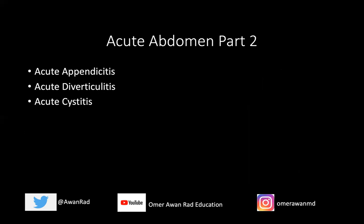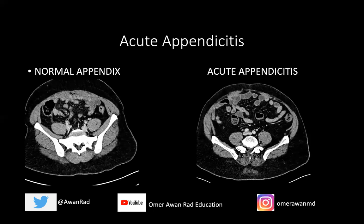So I want to talk about acute abdomen part two. We talked last week about three diagnoses related to the acute abdomen, but these are three additional diagnoses that we think about when we think about acute abdominal pain: acute appendicitis, acute diverticulitis, and acute cystitis. These are really bread and butter diagnoses. I want to lay the foundation for how we think about these on the USMLE and particularly the imaging findings with respect to these.